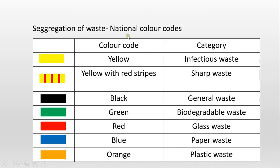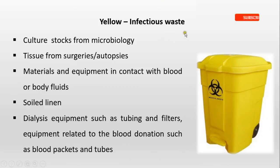Now we will consider the national color code system and the categories of waste under it. Yellow color is for infectious waste; yellow with red stripes is for sharp waste; black is for general waste; green is for biodegradable waste; red is for glass waste; blue is for paper waste; and orange is for plastic waste. We will now consider each category one by one.